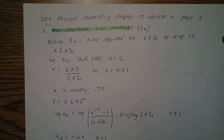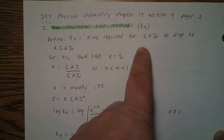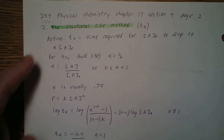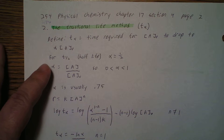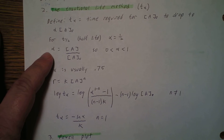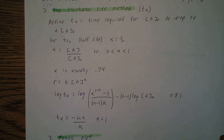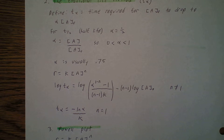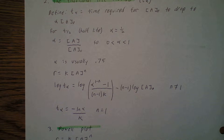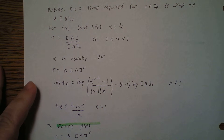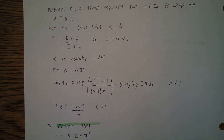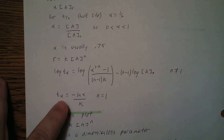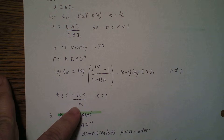Another way is called the fractional life method, or T-sub-alpha. T-sub-alpha is the time required for the initial concentration of A to drop to alpha times the initial concentration of A. It's like a half-life, but it might be 40%, 30%, 90%, or whatever is convenient. For the half-life, alpha is one-half. Alpha is the concentration of A divided by the initial concentration of A, so alpha must be between 0 and 1, and is usually about 0.75. With R equal to K times [A]^N, we get: log(T-sub-alpha) = log[(alpha^(1-N) minus 1) / ((N minus 1) times K)] minus (N minus 1) times log[A-naught]. This won't work if N equals 1 because of division by zero; in that case T-sub-alpha equals minus the natural log of alpha divided by K.